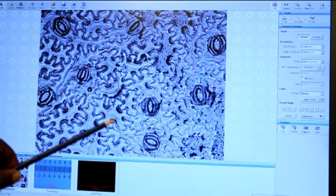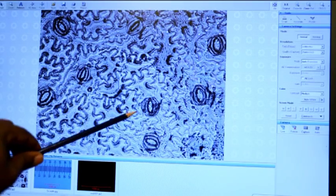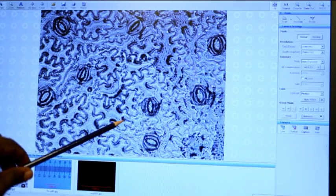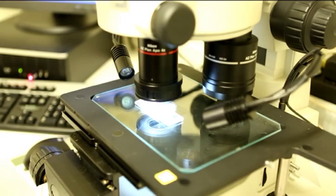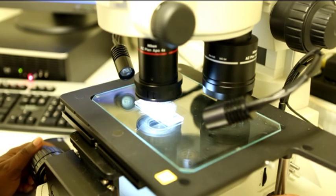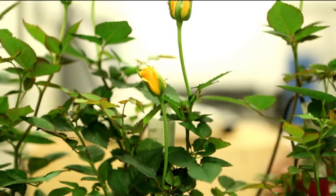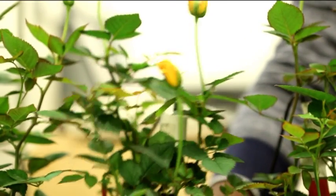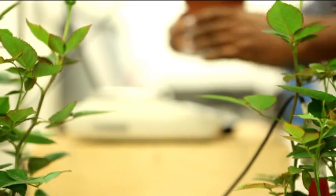These are stomata and they're found on the leaf surface. They are microscopic, we cannot see them by eyes. Their function is to control water loss in the plant and to control CO2 uptake for photosynthesis.